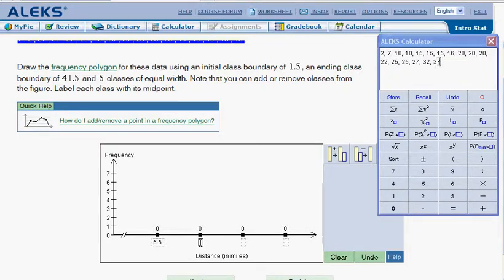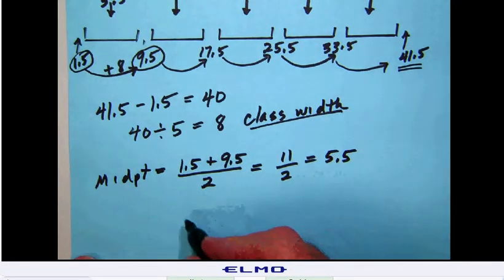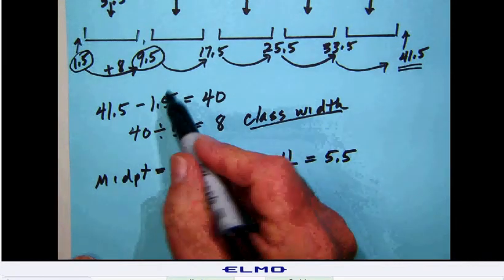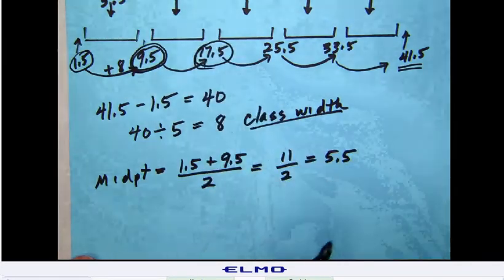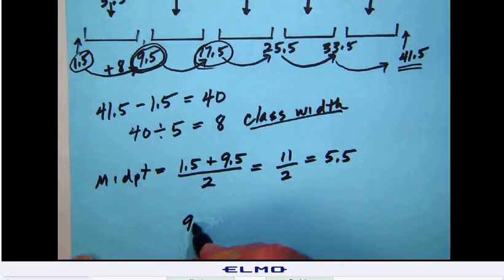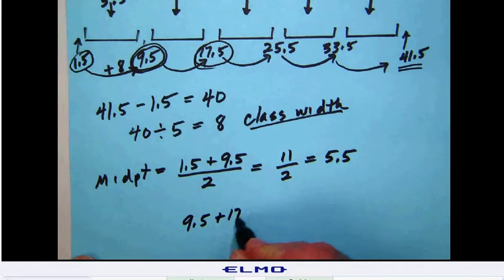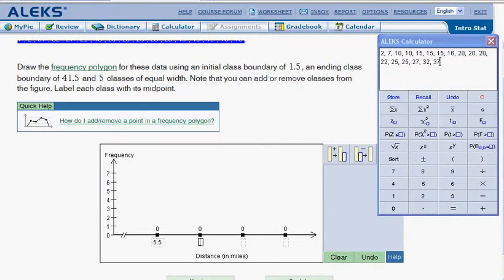We're going to need to calculate all the rest of those. Now, what we could do, we're not going to, but what we could do is to simply take the midpoint of the next class by taking the second and third class boundaries, adding them together, and dividing by 2. We could do that easily on our ALEC calculator. Let's go back and do that just for fun.